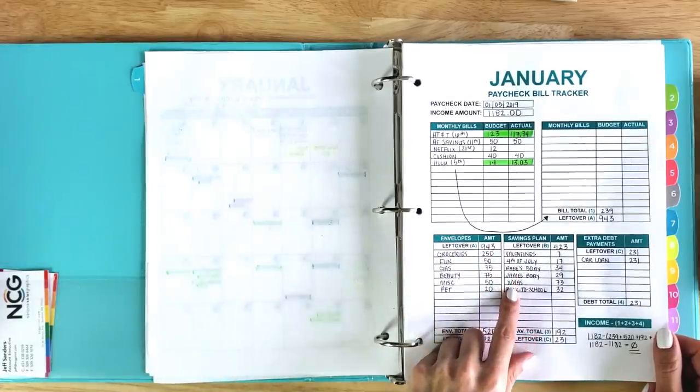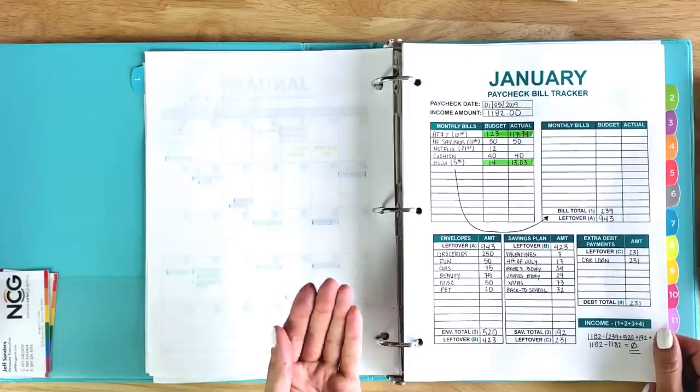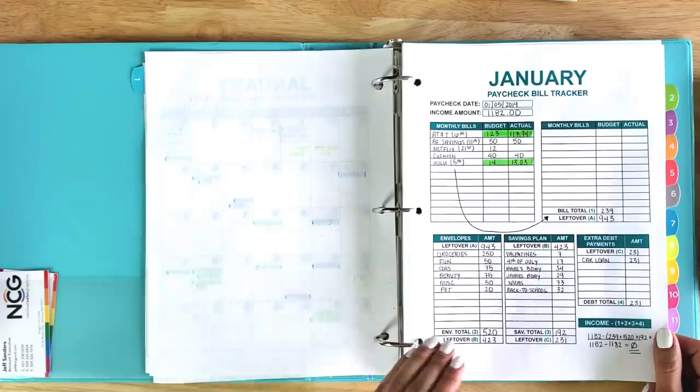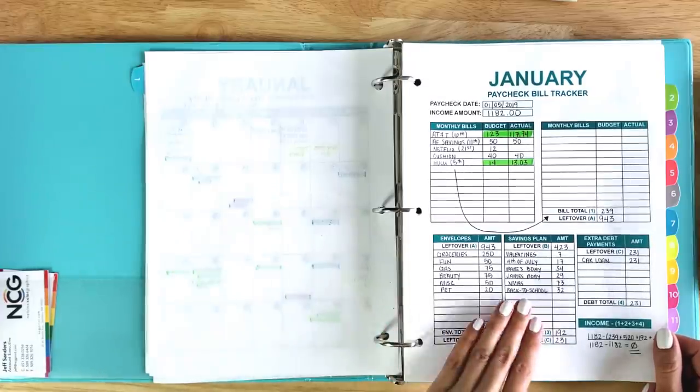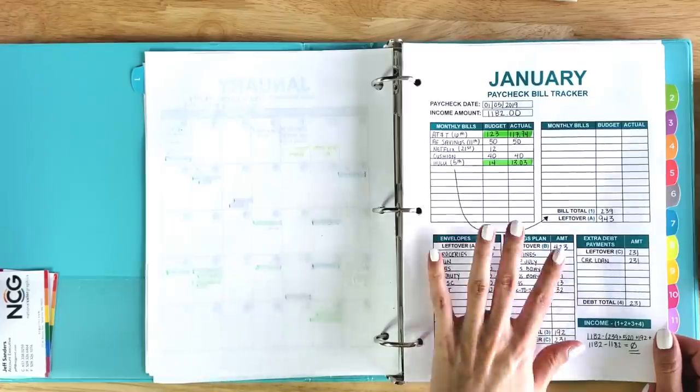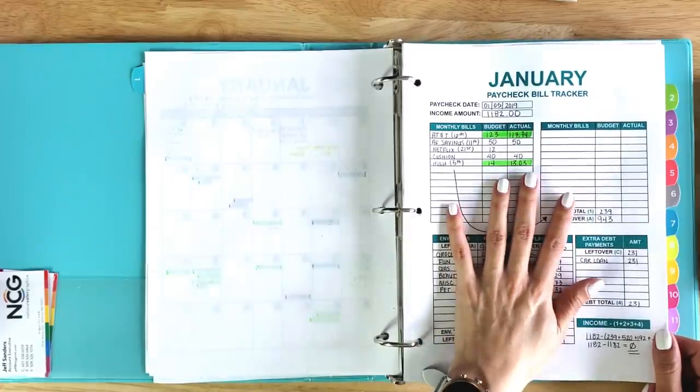My sinking funds might look different than something you want to save for. Maybe your sinking funds include a house maintenance account. I don't own a house. I'm in an apartment. So that wouldn't apply to me. That's how my sinking funds work for my paycheck on the 5th.